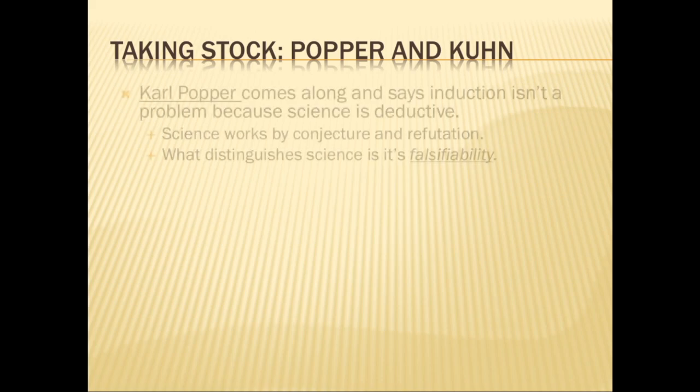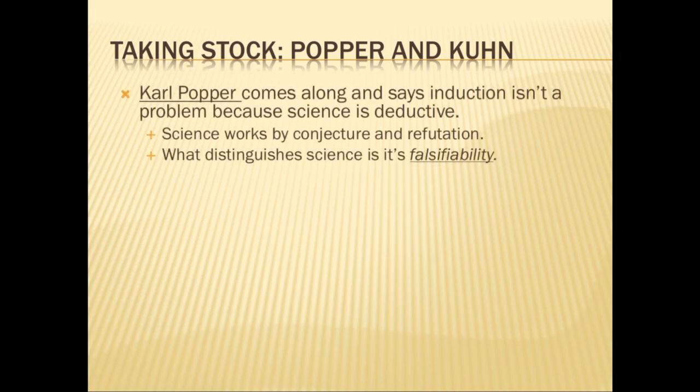Karl Popper suggested that that's okay, because science does not rest on induction — science actually rests on deduction. Science done properly is deductive, Popper said. It starts by the process of conjecture — maybe the universe works this way — and then we go out and try to refute that idea. Refutation, according to Popper, is a deductive process. All you need to refute a universal law is one counterexample. That's what distinguishes science from Popper's point of view: it's falsifiability. That's how he defined the criteria of demarcation — what demarcates science from pseudoscience.